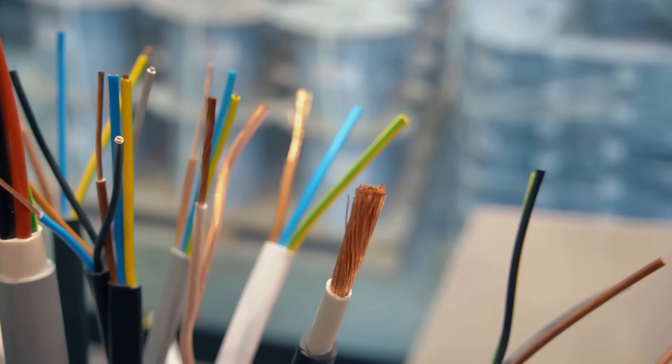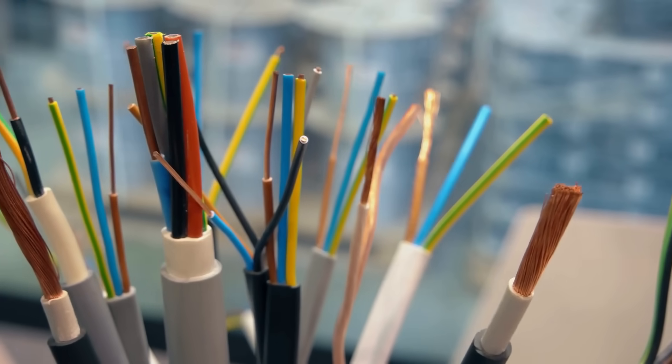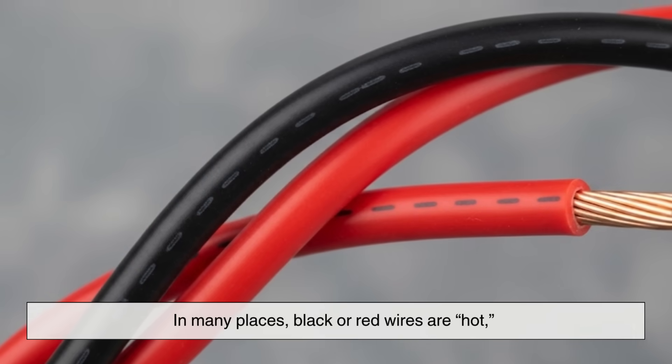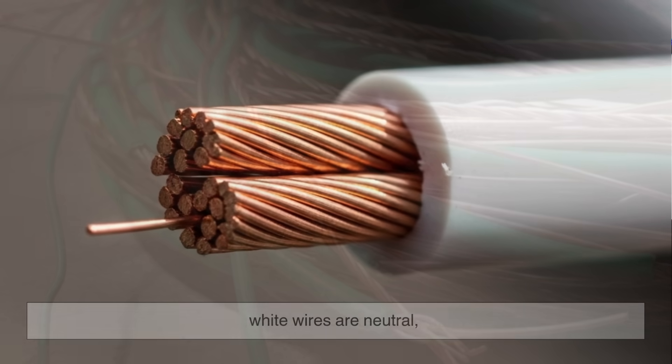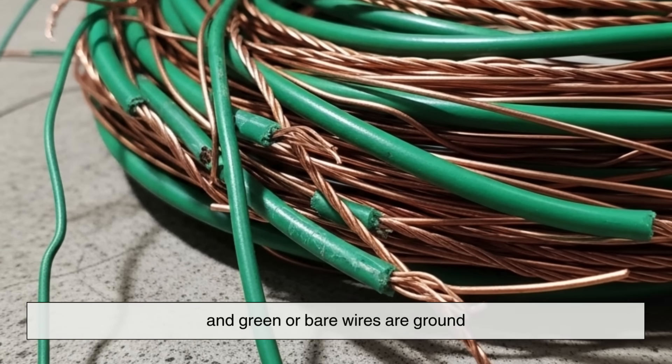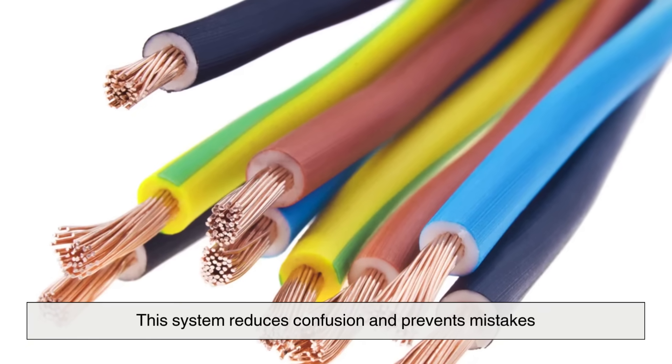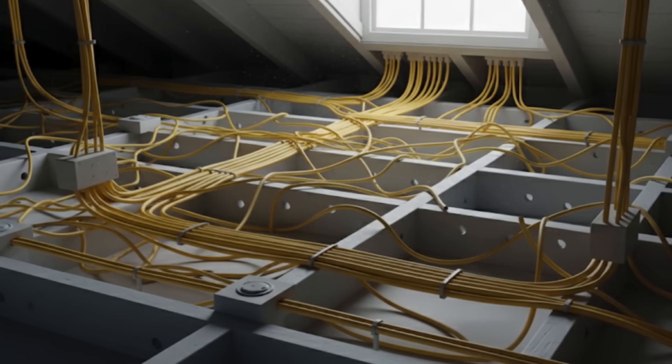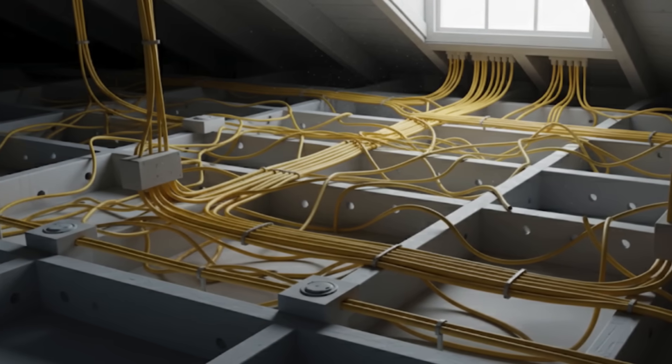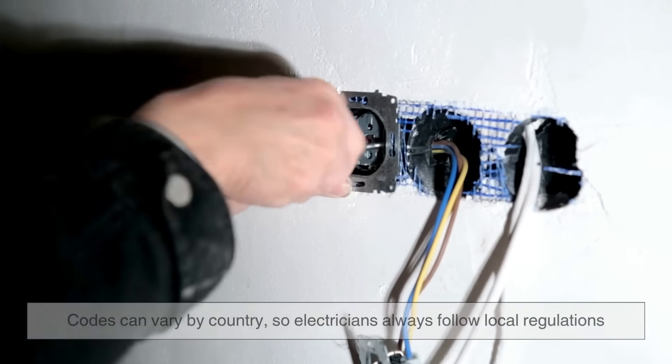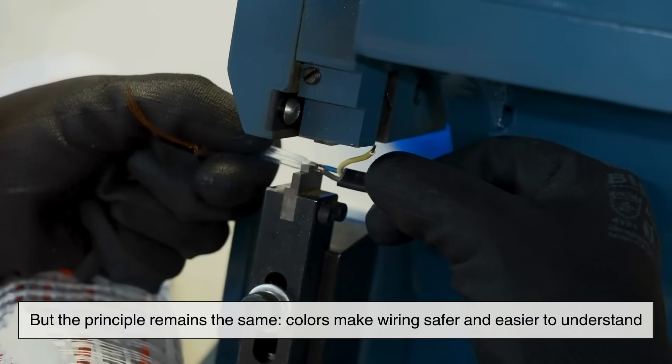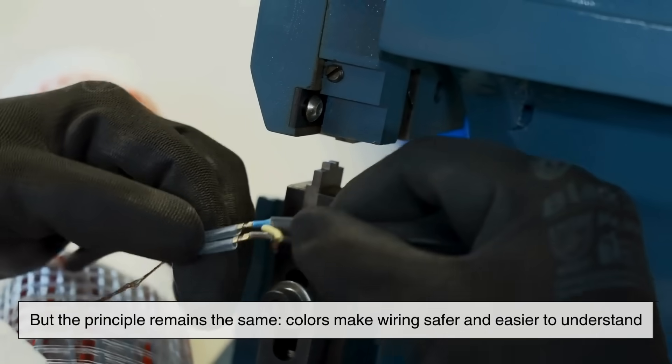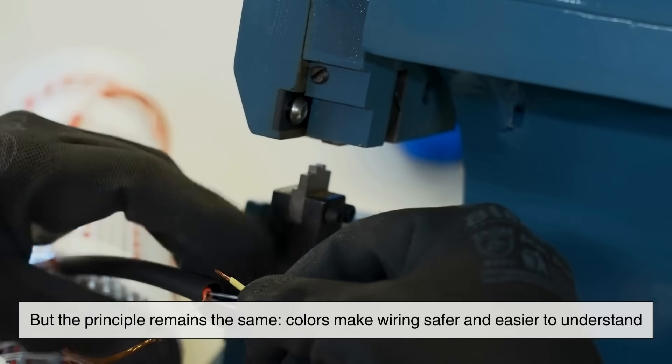One of the easiest ways electricians identify wires is through color coding. In many places, black or red wires are hot, white wires are neutral, and green or bare wires are ground. This system reduces confusion and prevents mistakes. Imagine trying to wire a whole house without colors. It would be a nightmare of guesswork. Of course, codes can vary by country, so electricians always follow local regulations. But the principle remains the same. Colors make wiring safer and easier to understand.